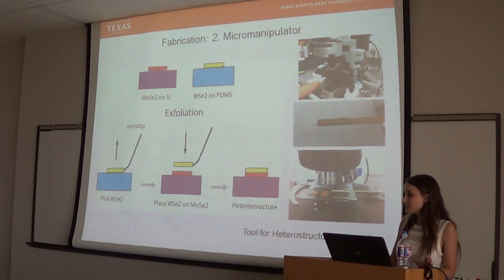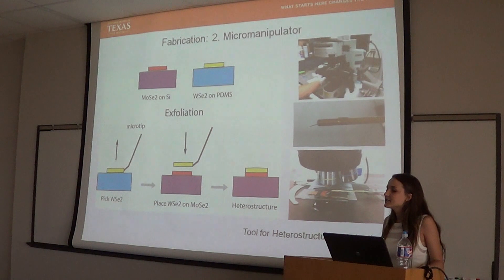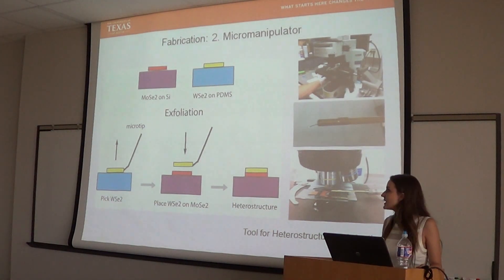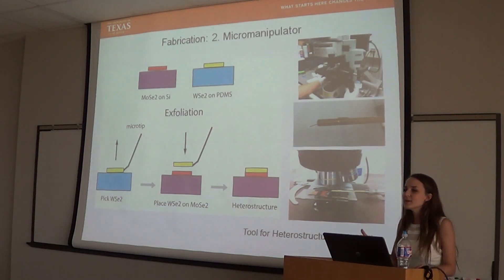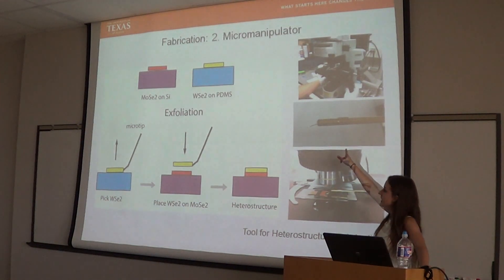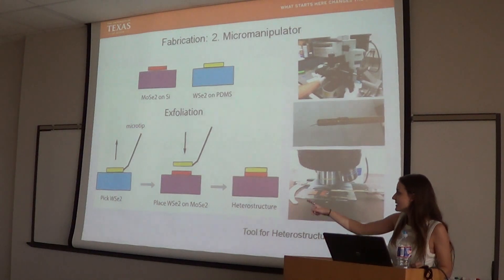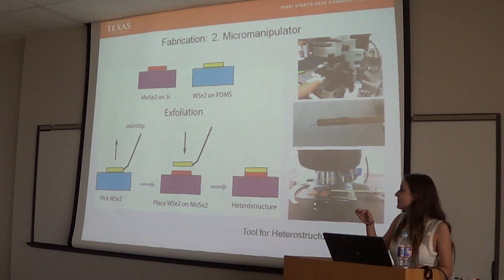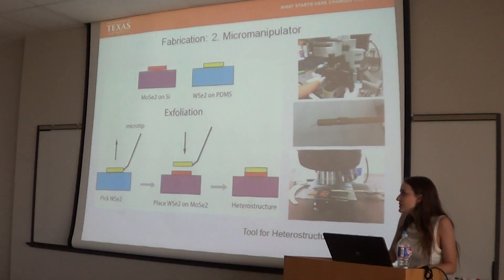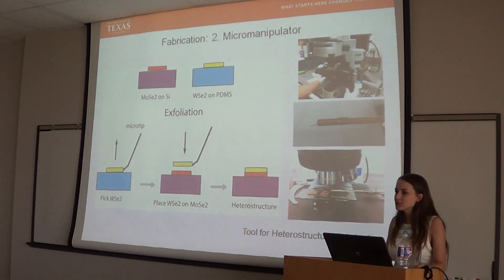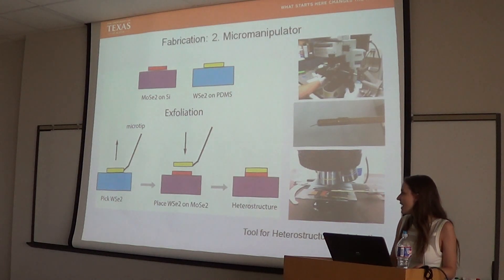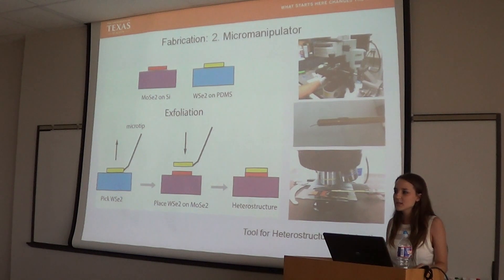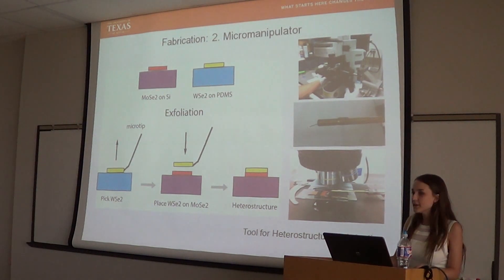Once you've achieved monolayer with your flakes, for the micromanipulator it's a simple process — no chemicals involved, no temperature change. You simply exfoliate your MoSe2 on your silicon-silicon oxide wafer and your WSe2 on PDMS. The PDMS is important because for the micromanipulator, you use a strong tungsten tip, go underneath your WSe2 flake on the PDMS, pick it up, and move it and place it on top of your MoSe2 flake. There are a few challenges: if your WSe2 is exfoliated onto PDMS, it's difficult to characterize — you can't tell if it's monolayer because you can't use certain machines like the Raman and photoluminescence test. Also, if it is monolayer, the tungsten tip sometimes is too sharp and will rip your flake. We've been working on optimizing this.